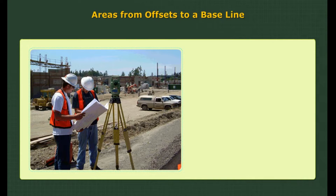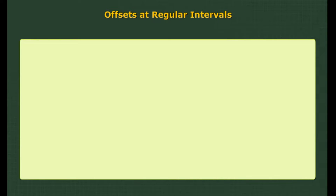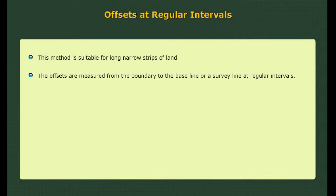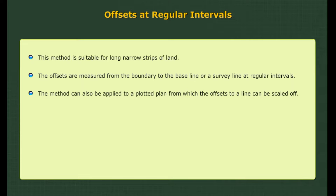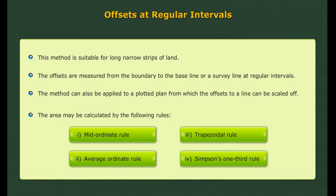Computing areas from offsets to a baseline: The areas from offsets to a baseline can be computed using two methods — offsets at regular intervals and offsets at irregular intervals. For offsets at regular intervals, this method is suitable for long narrow strips of land. The offsets are measured from the boundary to the baseline or a survey line at regular intervals. The area may be calculated by the following rules: 1. Mid-ordinate rule, 2. Average ordinate rule, 3. Trapezoidal rule, 4. Simpson's one-third rule.